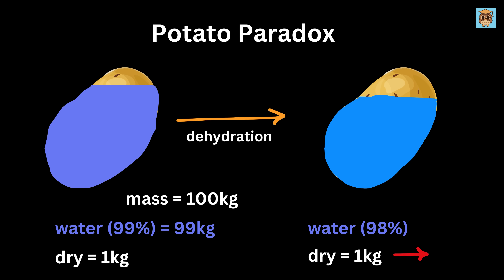Since that 1 kilogram of dry matter makes up 2% of the new total weight, the total weight becomes 50 kilograms. It's surprising that a 1% change in water content nearly halves the weight, which is why this problem is called a paradox.